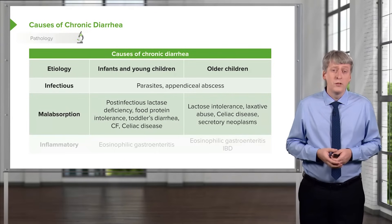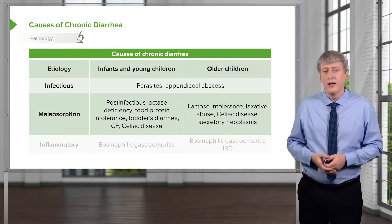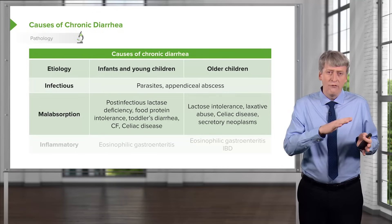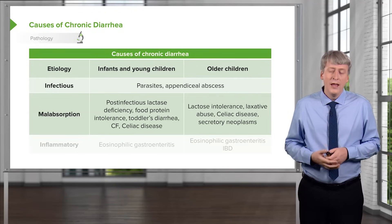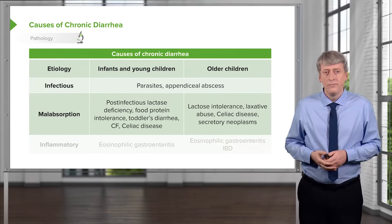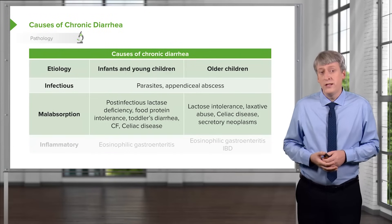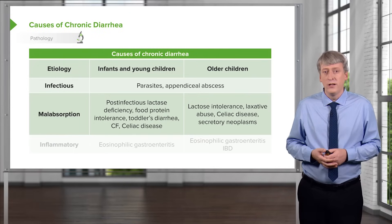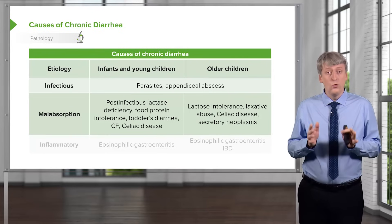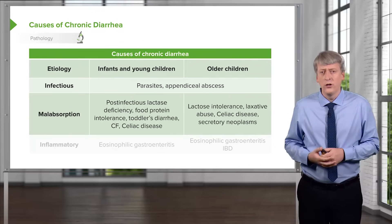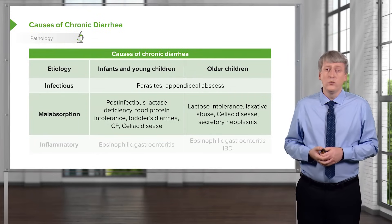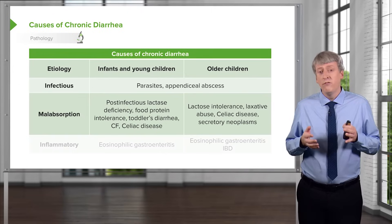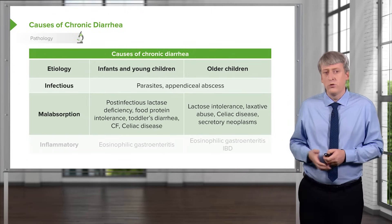Patients may have malabsorption problems, which cause osmotic diarrhea. Examples include post-infectious malabsorption — after their diarrhea, children can rub off the lactase in their intestinal wall and be transiently lactose intolerant. Patients can have food protein intolerance or allergy. Children can get cystic fibrosis, celiac disease, toddler's diarrhea. In older children, we do see true lactose intolerance. Adolescents who are trying to lose weight inappropriately may use laxatives. Celiac disease and very rarely secretory neoplasms can cause secretory diarrhea.